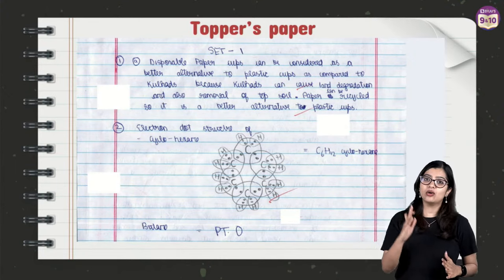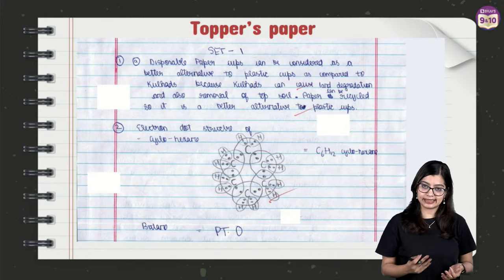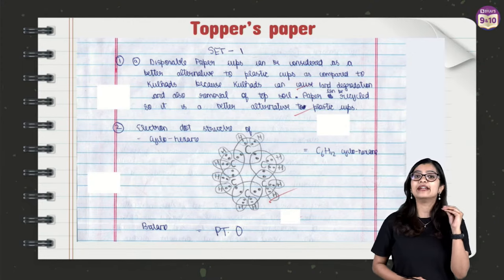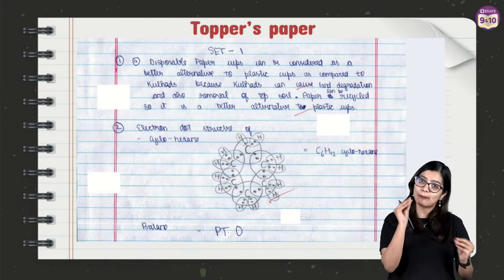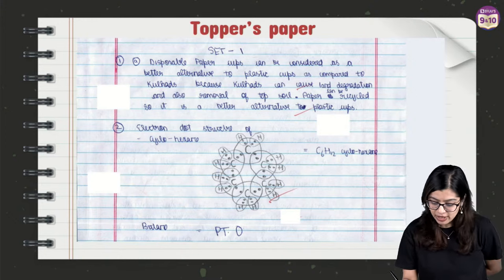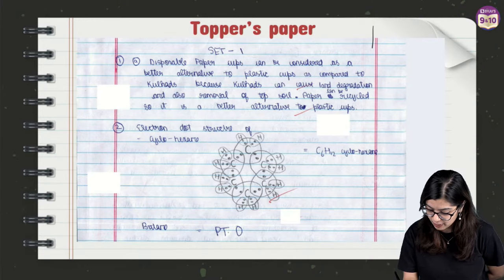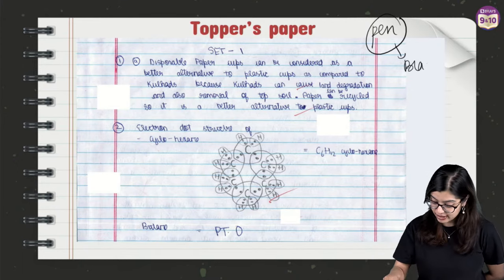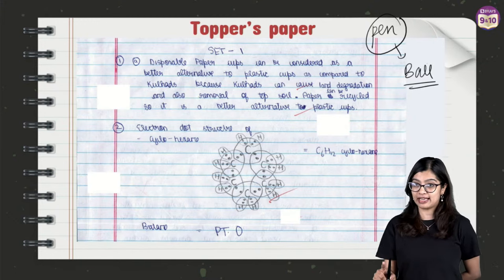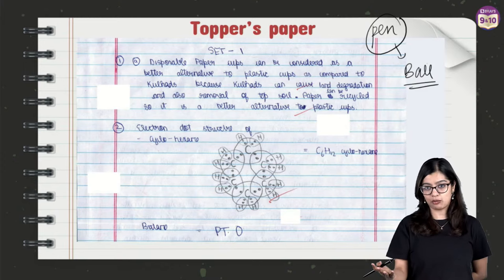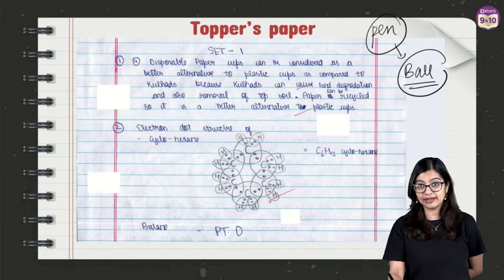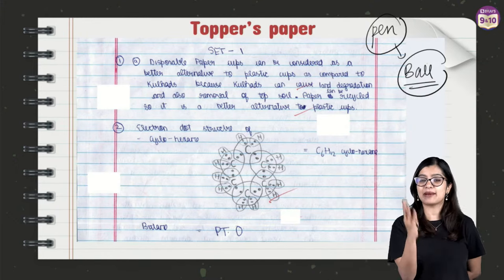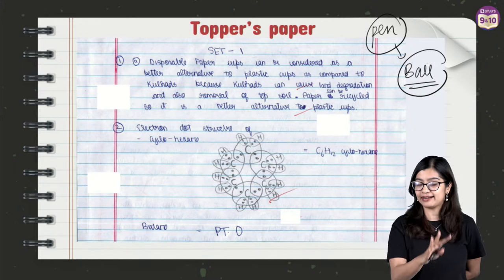When writing answers — whether for science or SST — there are a few generic things to keep in mind. First and foremost, make sure you are using a proper pen. Don't use black pen; use blue pen. Preferably use a ballpoint pen over a gel pen, but if your handwriting looks better in a gel pen, carry a minimum of three to four pens to the exam hall, as gel pens can run out of ink.